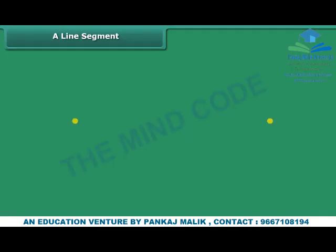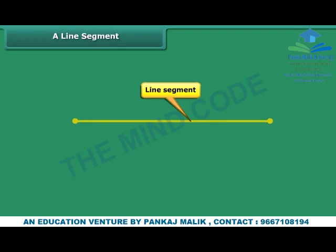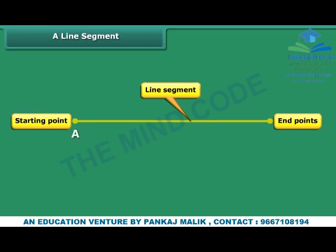The shortest distance between two points is known as a line segment. The starting and ending points of a line segment are its end points. A line segment can be named by naming its end points. We can call this line segment AB or BA.